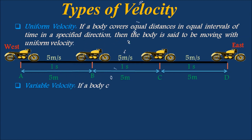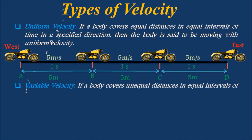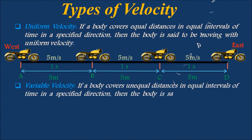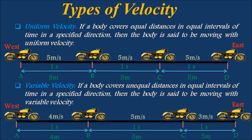If a body covers unequal distances in equal intervals of time in a specified direction, then the body is said to be moving with variable velocity. For example, if a bike covers 4 meters along A-B, 5 meters along B-C, and 3 meters along C-D in equal intervals of 1 second, then the bike has variable velocity of 4 m/s, 5 m/s, and 3 m/s towards east along respective paths.